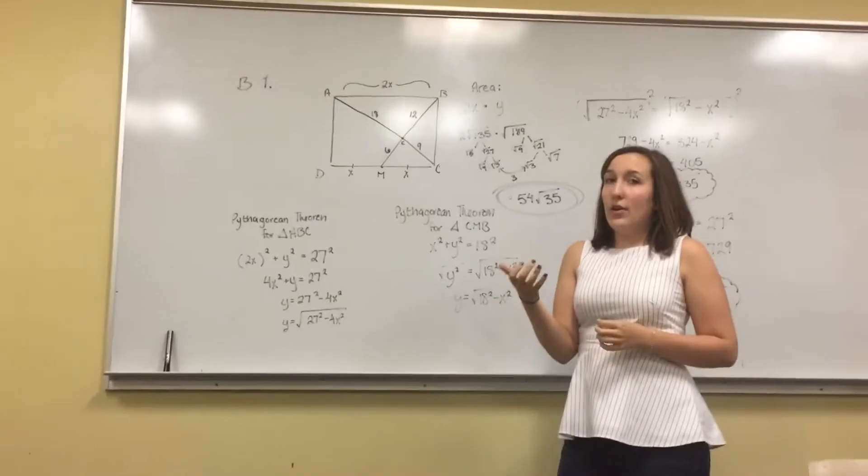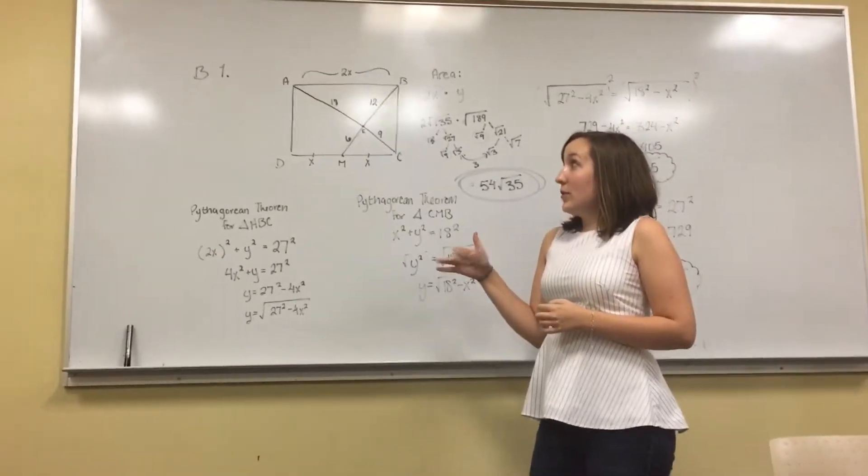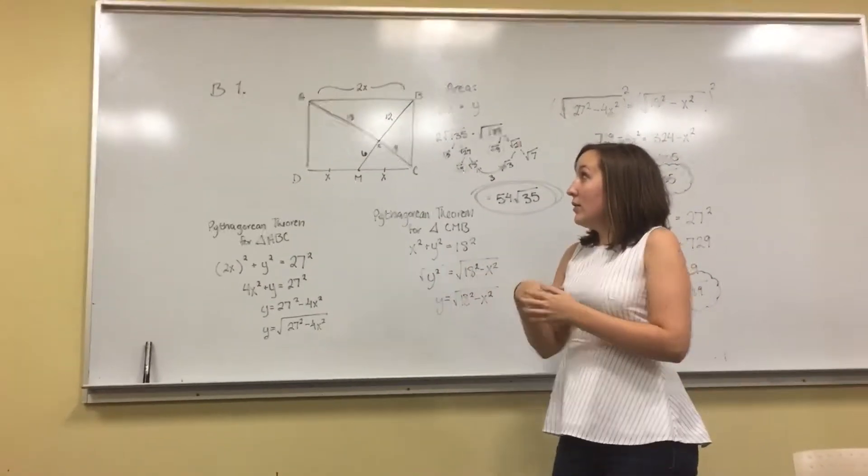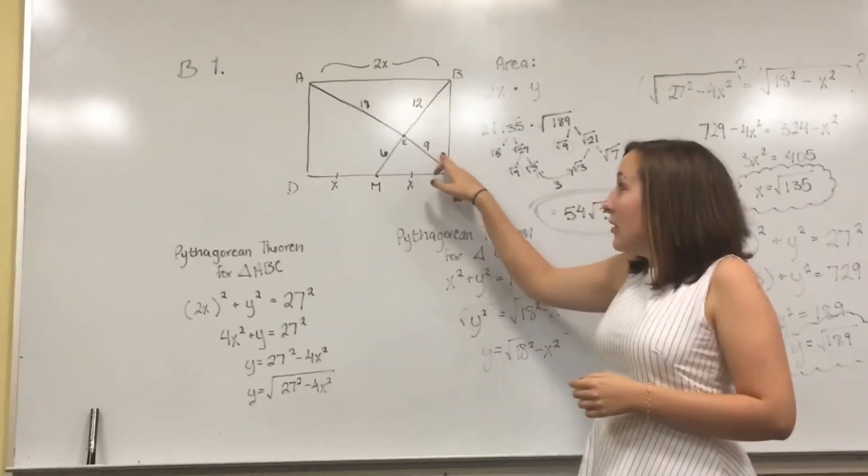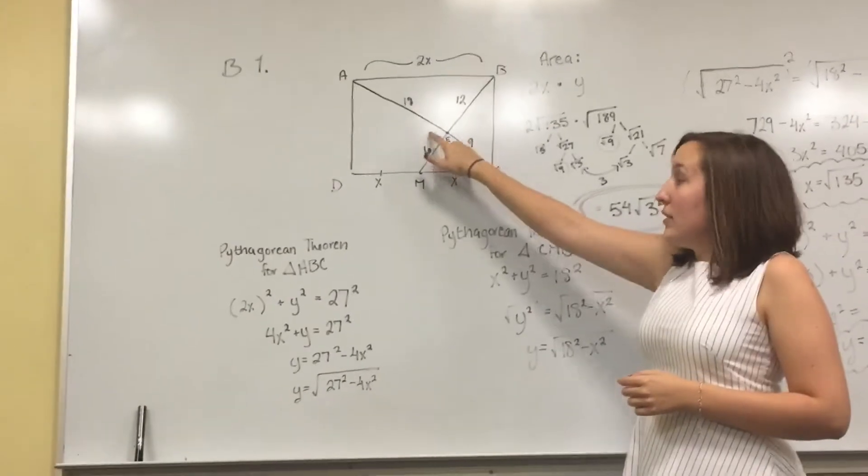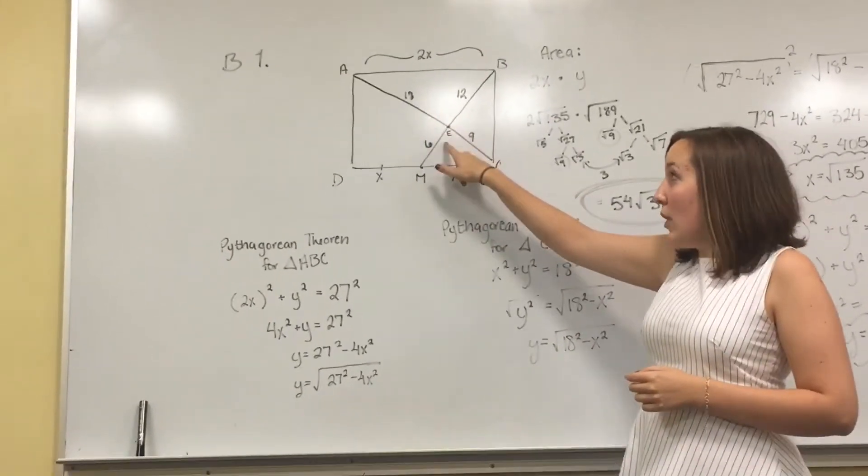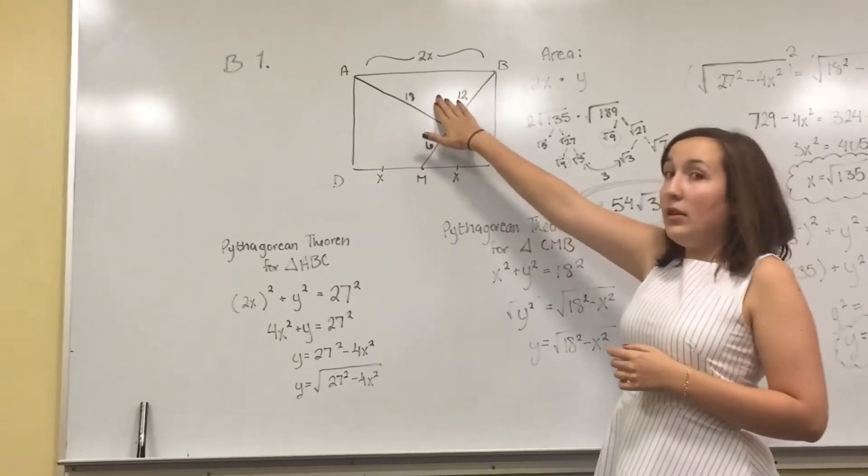So like this angle, it's gonna be the same as this angle, and this angle the same as this angle, and this angle same as this one, this one the same as this one. So this triangle and this triangle are similar.